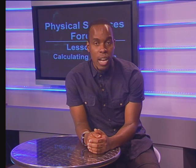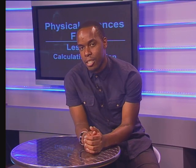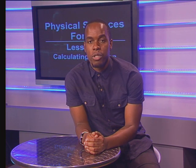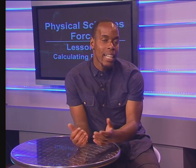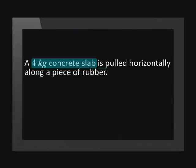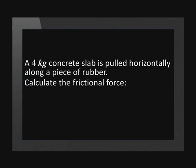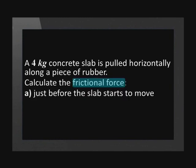Right, so now we are ready to do some calculations. First with a horizontal surface and then with an inclined plane. A four kilogram concrete slab is pulled horizontally along a piece of rubber. We need to calculate the friction of force just before the slab starts to move and as it moves.